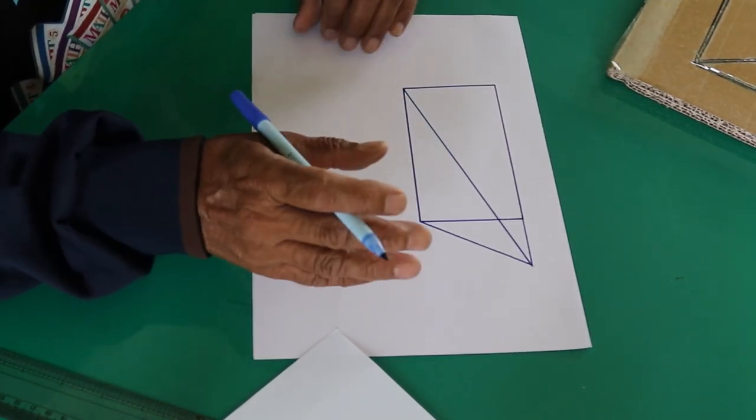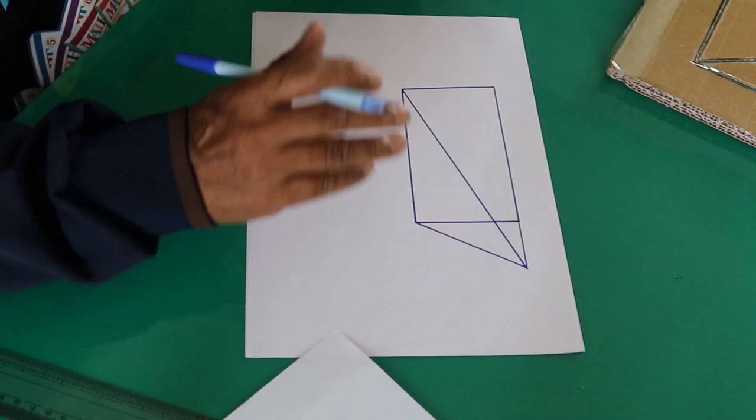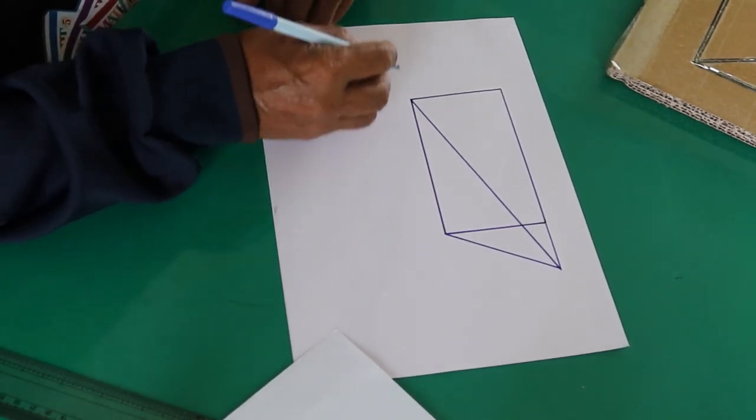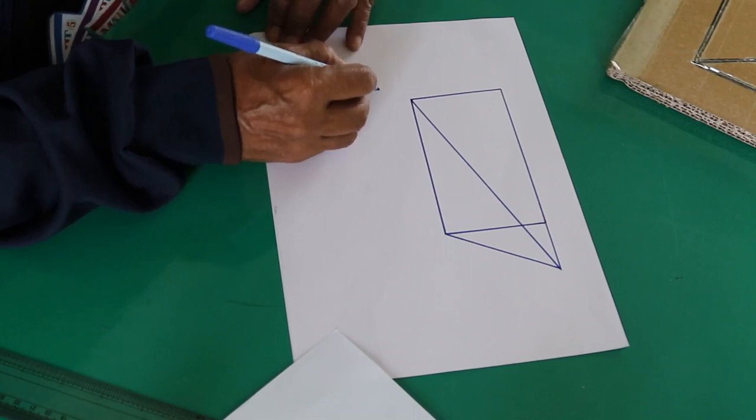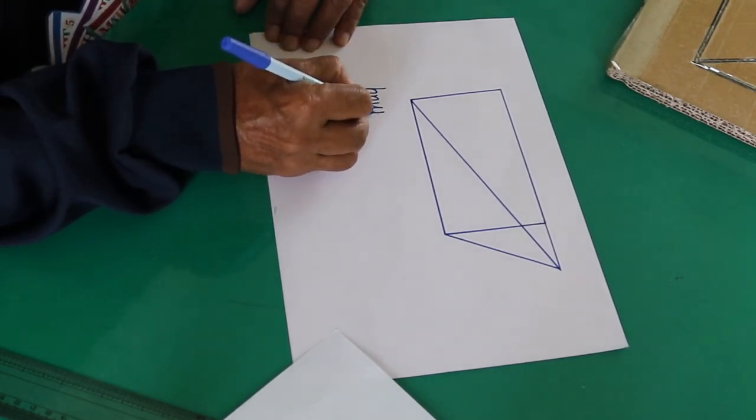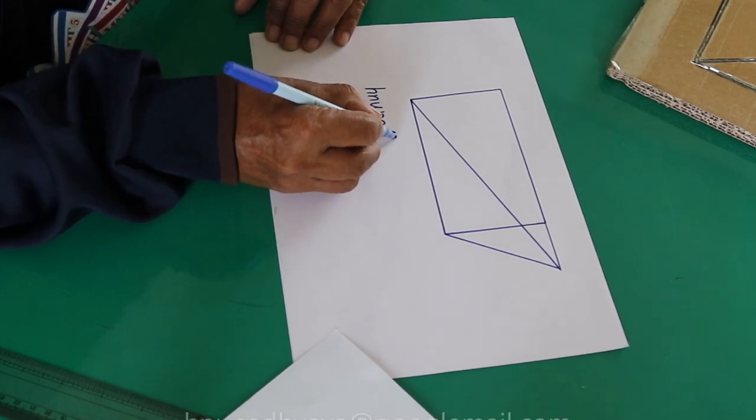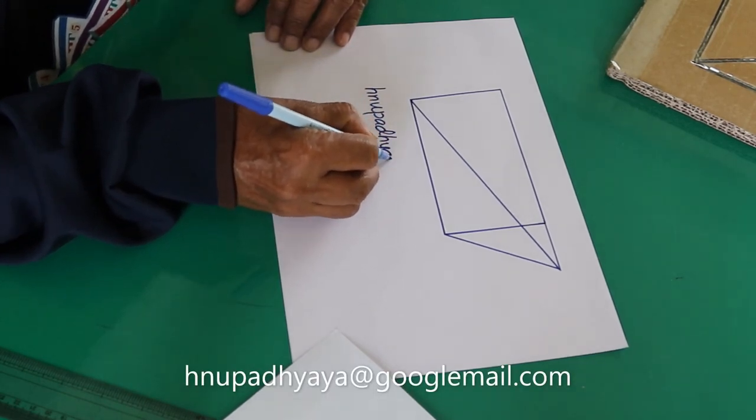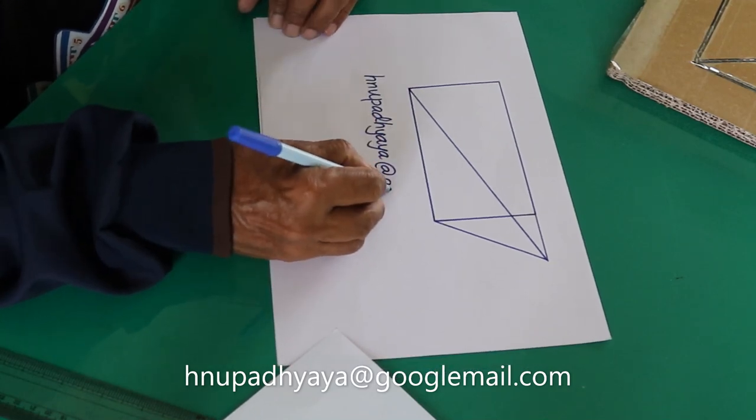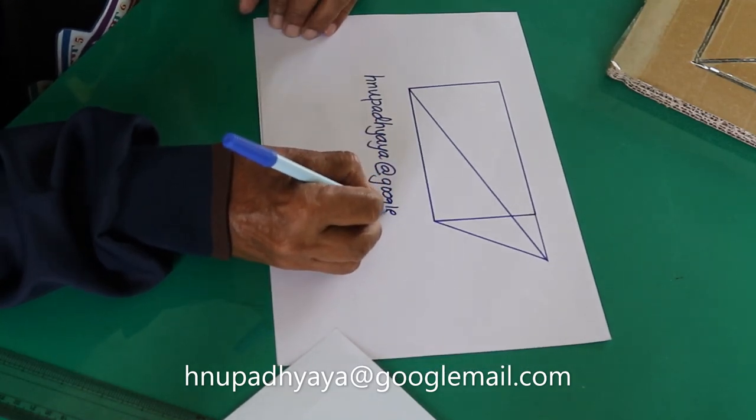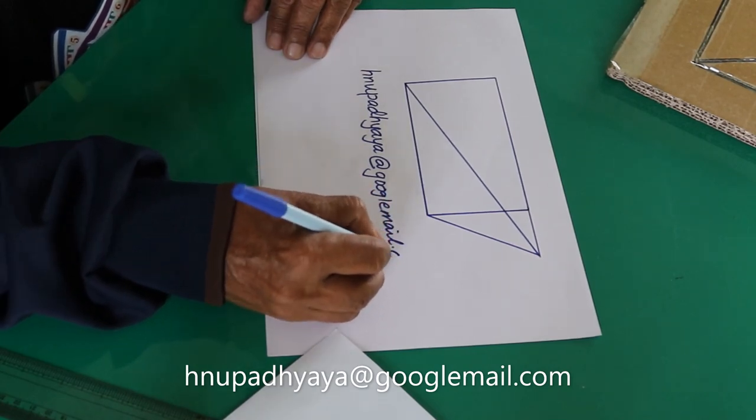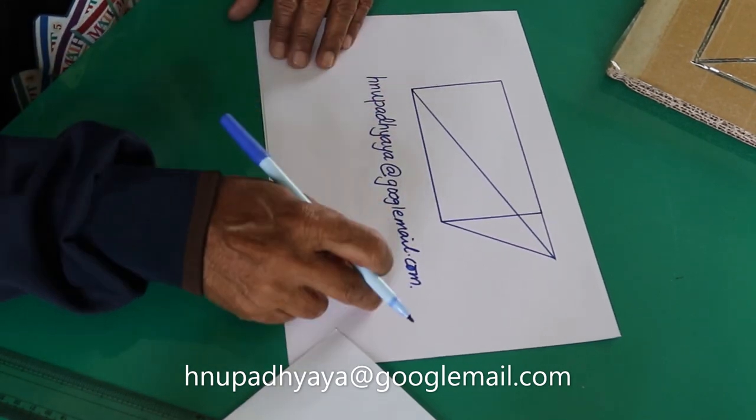And perhaps you would be given something as the gift. I will announce the gift tomorrow, what you will be getting exactly from Math Art Studio. And you send it in my email address. Please copy it: H-H-N-U-P-A-D-H-Y-A at Google Mail dot com. You send your solution to me.